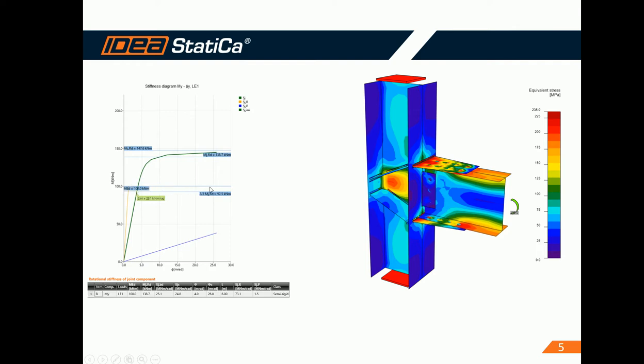Level of design load, limit value of capacity of connection for the 5% equivalent strain, 2/3 of limit capacity for calculation of initial stiffness, limits for the classification of connection—rigid and pinned—result table with all values.